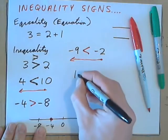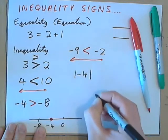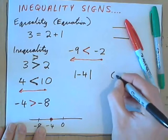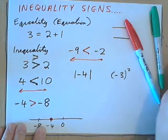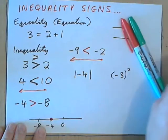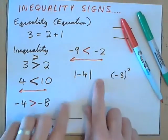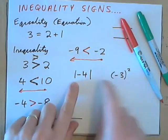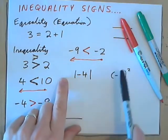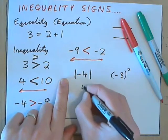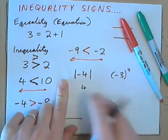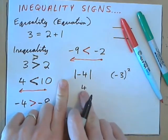You might also see something like this. Absolute value of negative 4. And then, over here, we might have negative 3 all squared. Okay? And you might see, you might have to put an inequality sign in between them. So, first of all, we calculate each value. Absolute value of negative 4 gives us positive 4. And we've studied that. Negative 4 is 4 units away from 0.